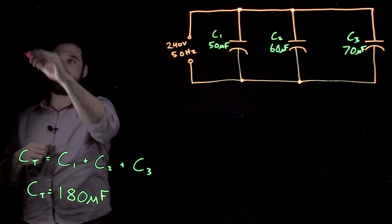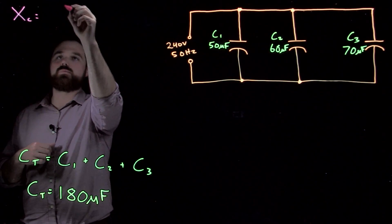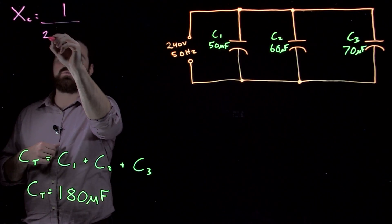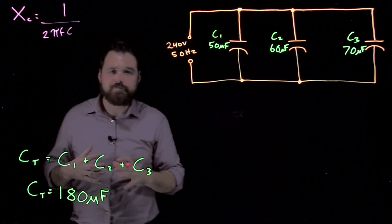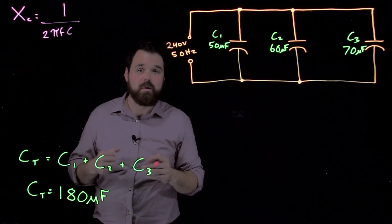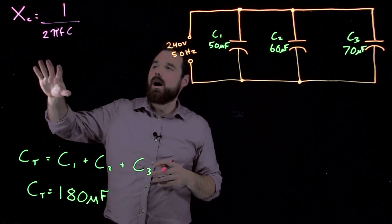We're going to use the formula of XC equals 1 over 2πFC. Not a new formula, we've been using it a lot.